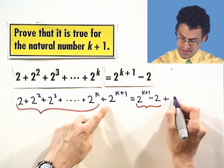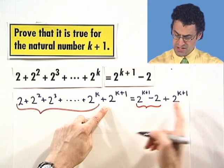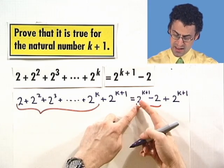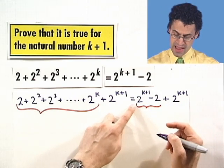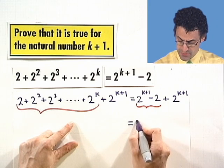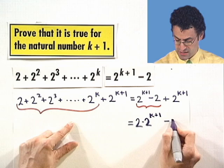But don't forget, this new sum has this extra term tacked on. Well, actually, we can combine these things because here I have 2 to the k plus 1 plus another 2 to the k plus 1. How many 2 to the k plus 1's do I have? I've got two of them. So I have 2 times 2 to the k plus 1 minus 2.